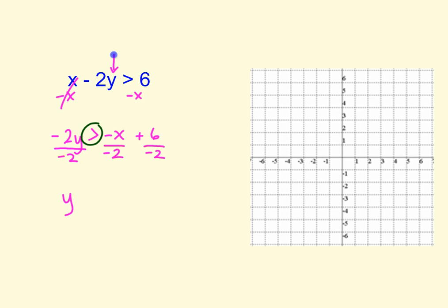So instead of greater than, it's going to become less than. And then we have a negative x, that's like a negative 1x over a negative 2. So the negative divided by negative becomes positive. So you have a positive 1 half x. And then 6 divided by negative 2 is a negative 3.